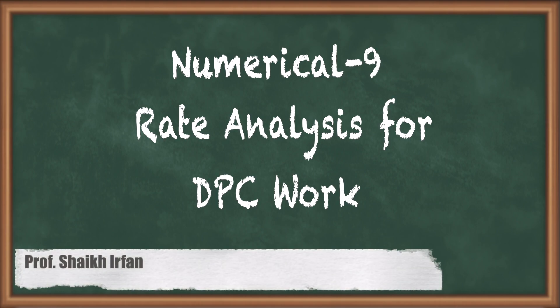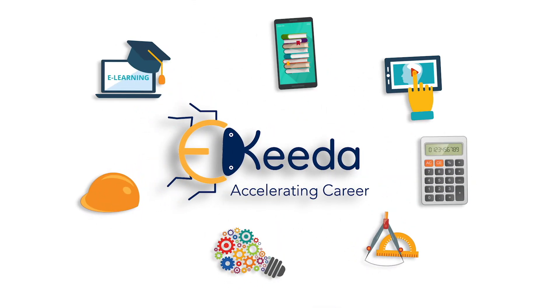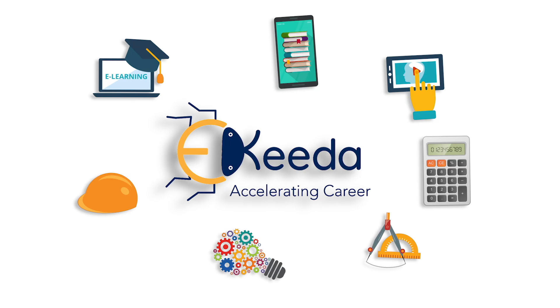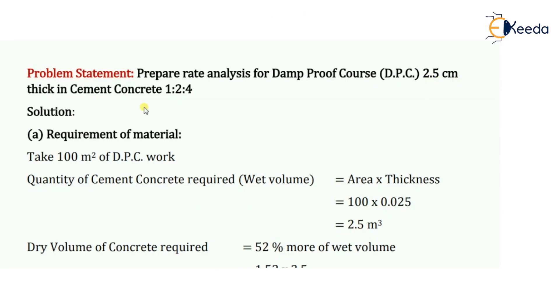Hello everyone. In this video we are going to see a numerical on rate analysis for damp proof course, in short called DPC work. The thickness given here will be 2.5 centimeter. The problem statement says: prepare rate analysis for damp proof course, that is DPC 2.5 centimeter thick in cement mortar, and the proportion is 1:2:4.